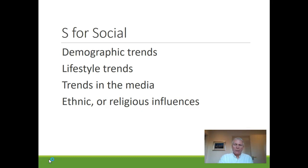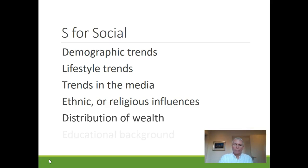Other areas to cover in the Social section include distribution of wealth — in many countries there is an increasing gap between rich and poor, which might have an influence on your product or service. Also consider educational background. Discussions in many countries on how to increase the number of youth choosing to take an education as a carpenter, production technologist, mason or plumber instead of an academic could eventually influence decisions on your product or service.